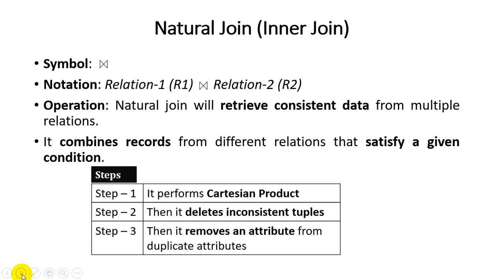After removing inconsistent tuples, step three is to remove duplicate attributes. In a Cartesian product, two different relations may share the same attribute, and both appear in the output, which can produce inconsistent data. Natural join omits the common attribute from the final result, which is a significant advantage over the Cartesian product, especially when data volume is large.